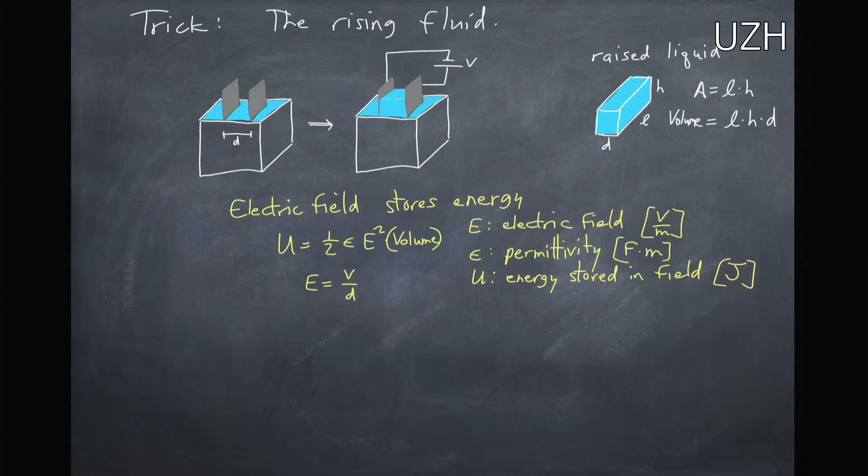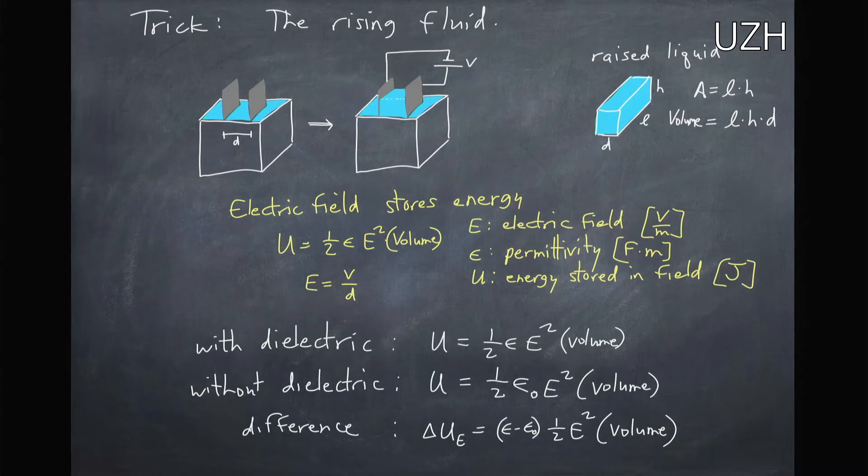Now an electric field stores energy and the formula for this energy stored is one-half epsilon E squared times the volume. So the electric field itself is holding this energy. With a dielectric inside, so fluid inside, we have this energy is one-half epsilon E squared times the volume. If there was no dielectric, in air this is approximately one-half epsilon zero E squared times the volume because the dielectric constant of air is quite close to one.